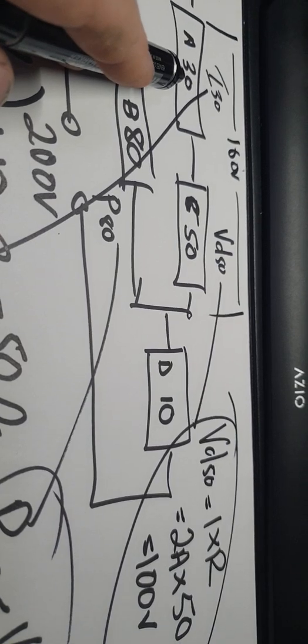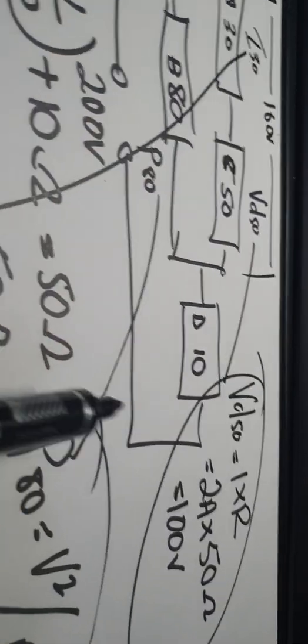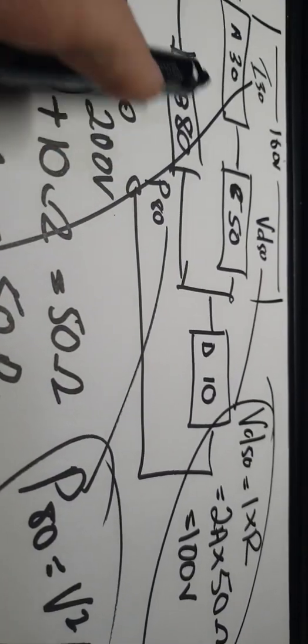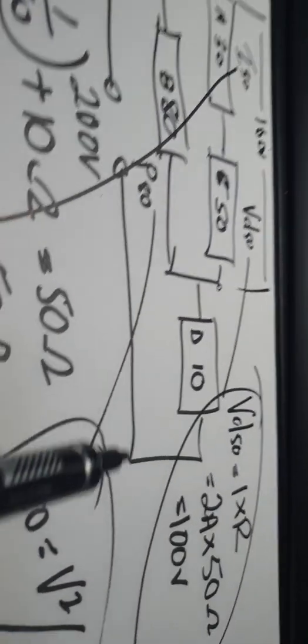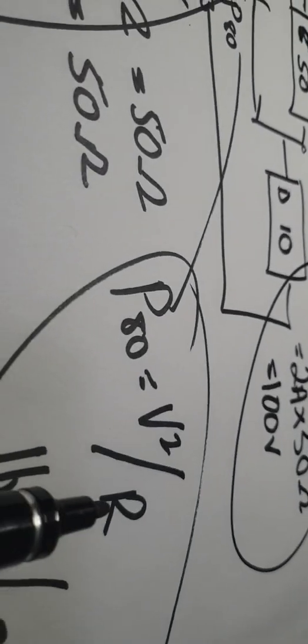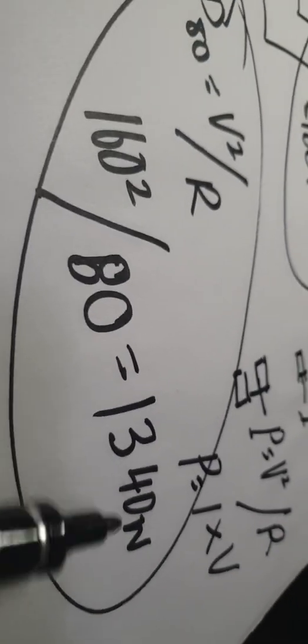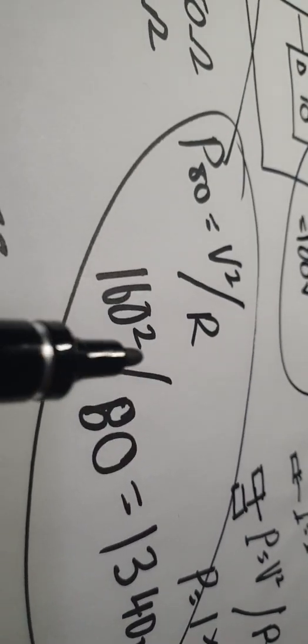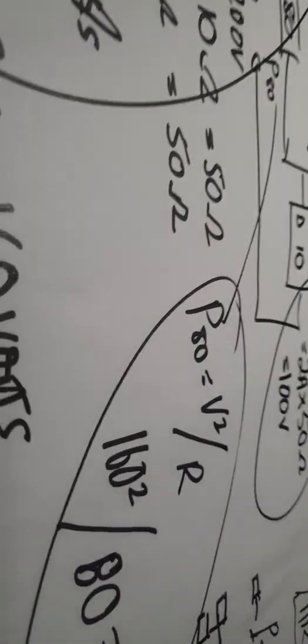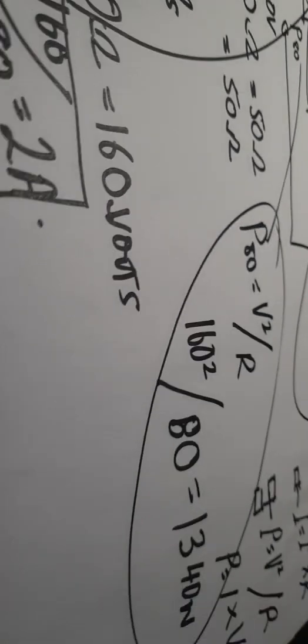And the power over here, because this is in parallel, the voltage drop over R: so 160 squared divided by 80 equals 1,340. I could be wrong on that anyway, but the bottom line is we've got this formula worked here. I'll put this on YouTube and we'll see how we go. Thanks very much.